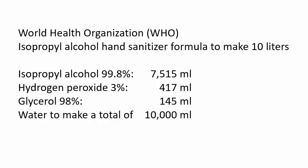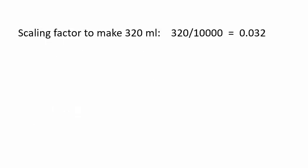To get the scaling factor, divide the desired total amount by 10,000 milliliters. For example, to make 320 milliliters, the scaling factor is 320 divided by 10,000, or 0.032.